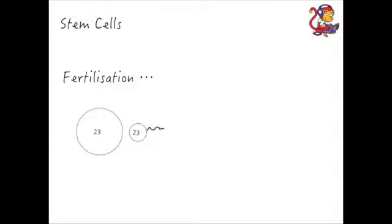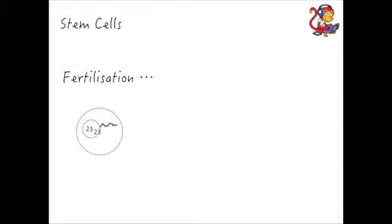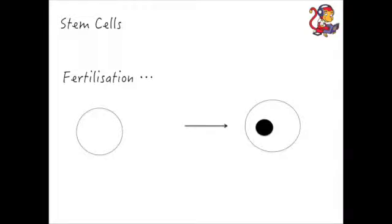Hello and welcome to this video about stem cells. To start off with our discussion of stem cells, we need to think about what happens at the start of life, at fertilisation. In the fertilisation process the gametes will meet and the nuclei of those gametes will fuse, so you have a sperm cell and an egg cell fusing to form a fertilised egg cell with 46 chromosomes.